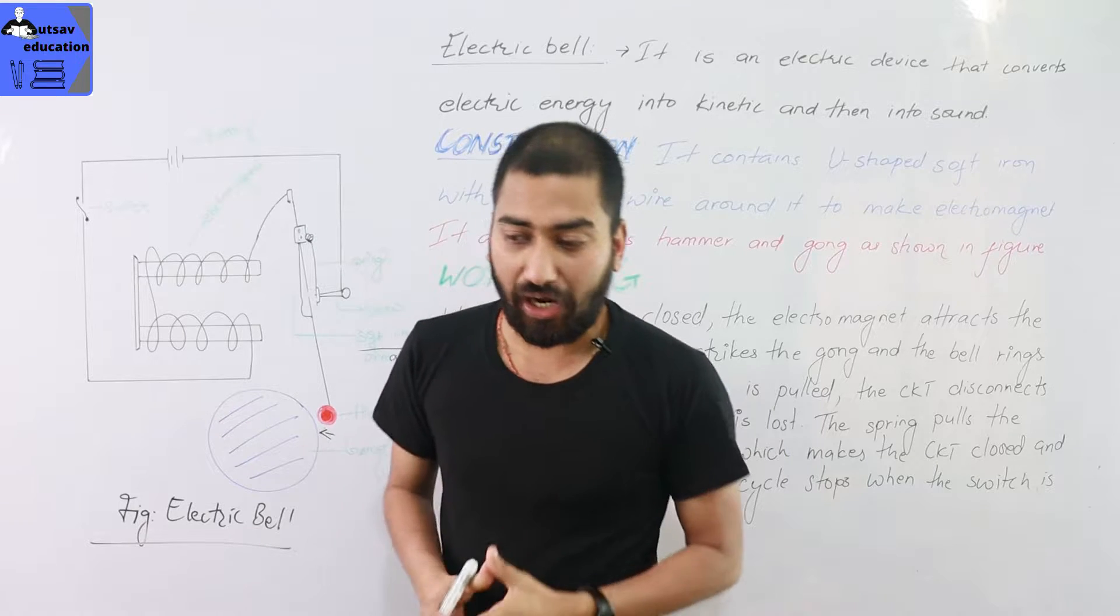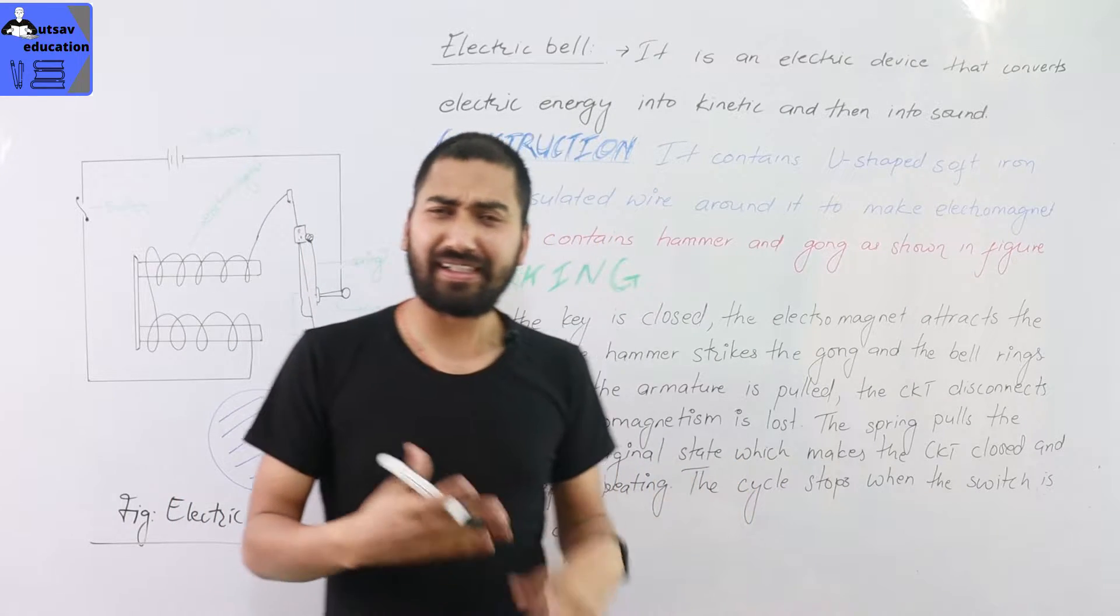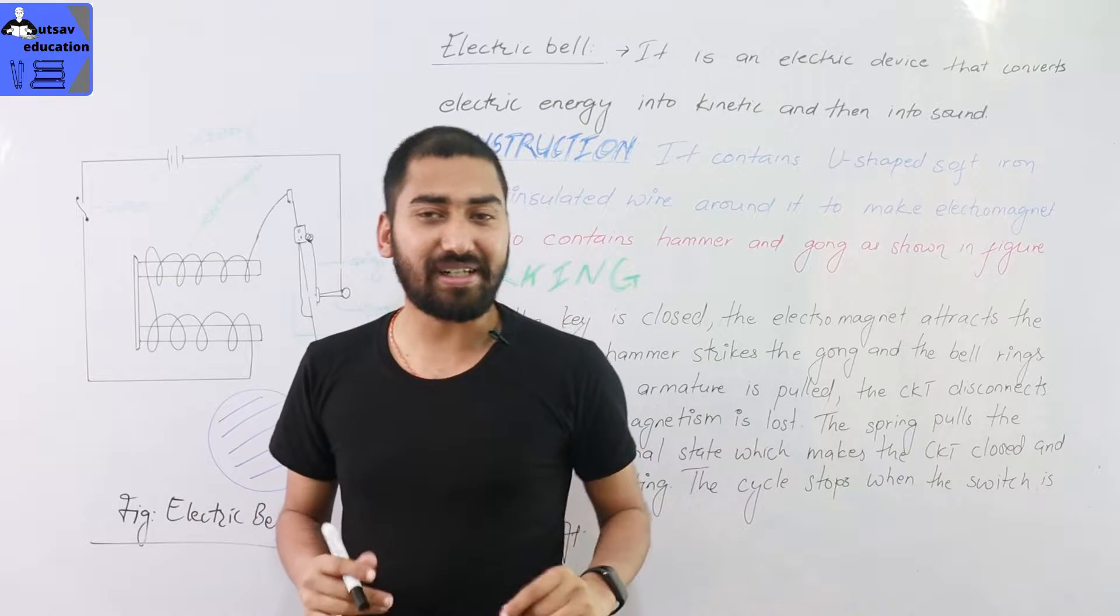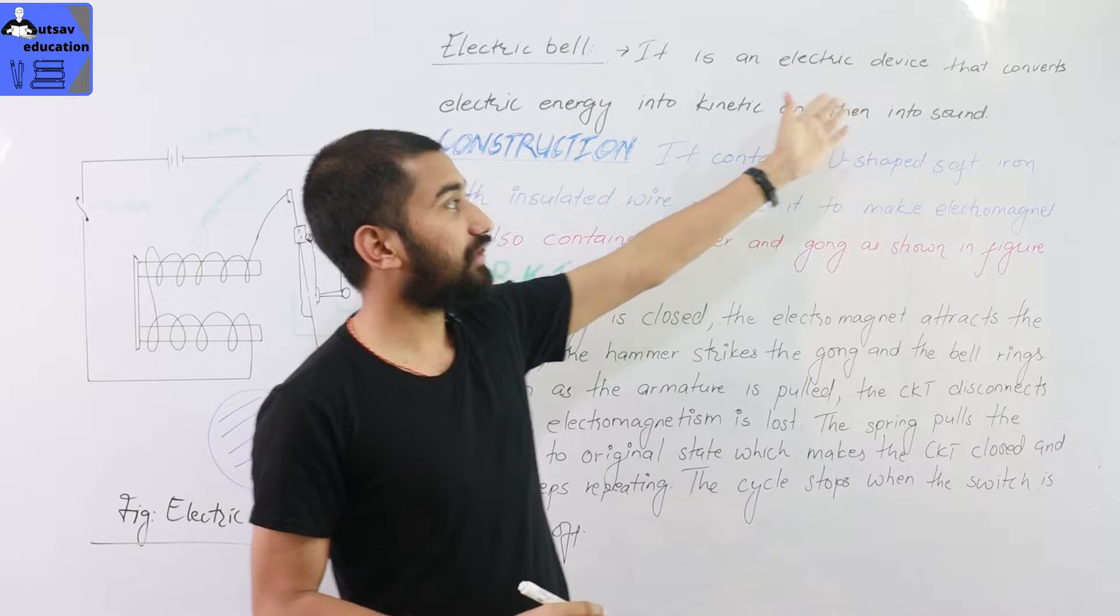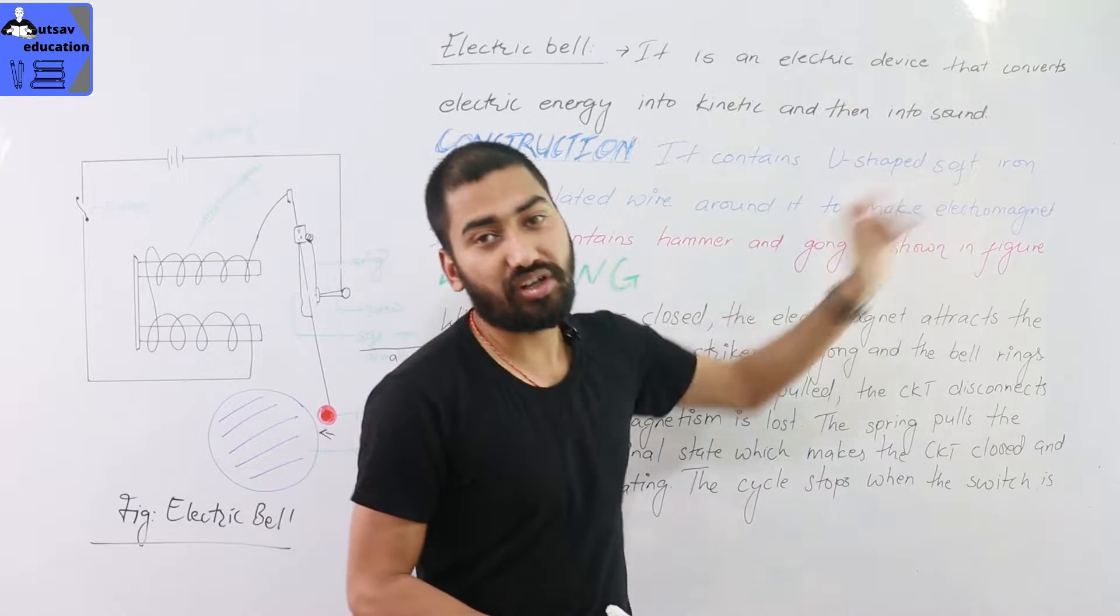Okay, so how does an electric bell work? What is an electric bell? It is an electric device that converts the electric energy into kinetic energy and then into sound energy.